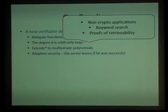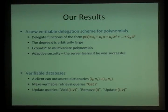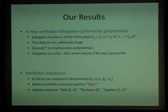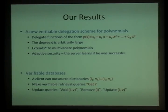This has several non-cryptographic applications, as well as new results in keyword search and proofs of retrievability, which I may mention if time permits. Using similar techniques, we also built an authenticated data structure that provides a trade-off between the assumption used and how much power the verifier needs. In our solution, the verifier needs a secret key — in previous solutions it was a public key — but we use slightly better assumptions. I will focus on the verifiable delegation scheme for polynomials and not go into the second primitive; it's in the paper.